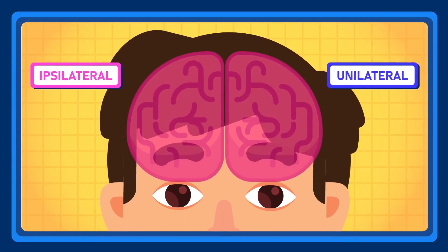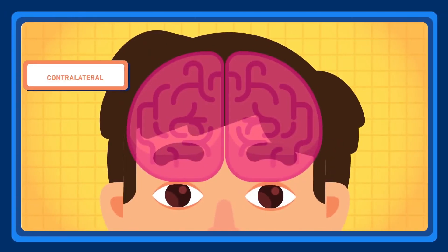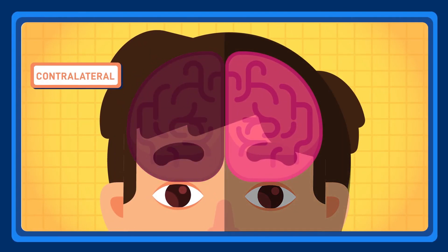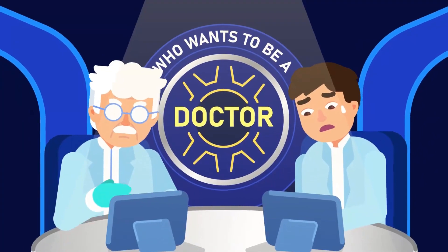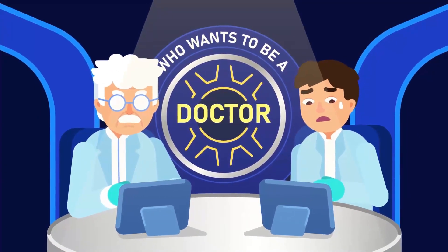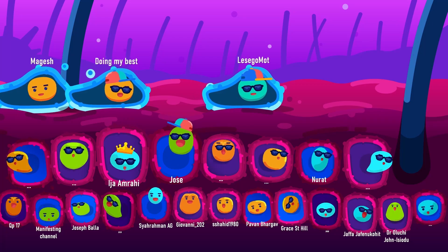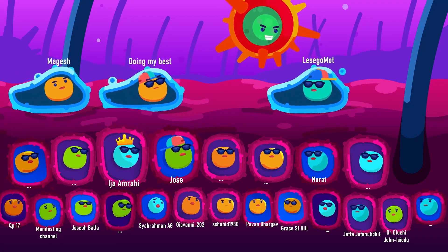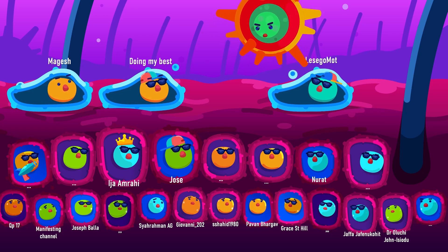Ipsilateral or unilateral means on the same side of the body, such as when a tumour affects one of your eyes. Contralateral means on the other side of the body, such as when a stroke occurs in the brain. Now, after learning all of those rules, the surgeon would be more prepared for their first surgery. Thank you for your continuous support, especially our valued patrons and members who have been encouraging us to keep producing more quality content.